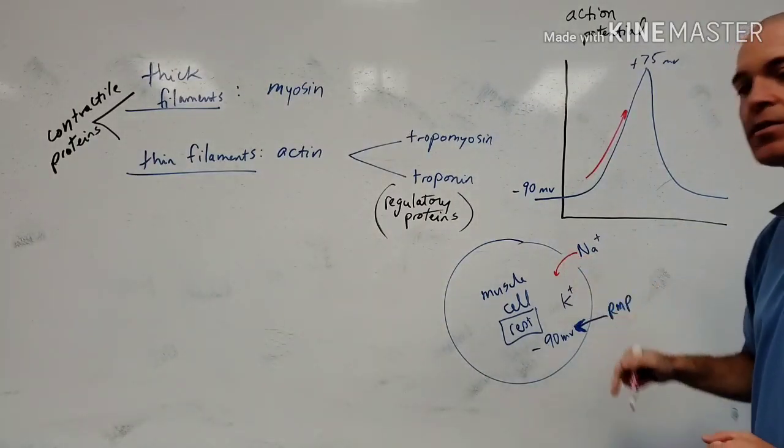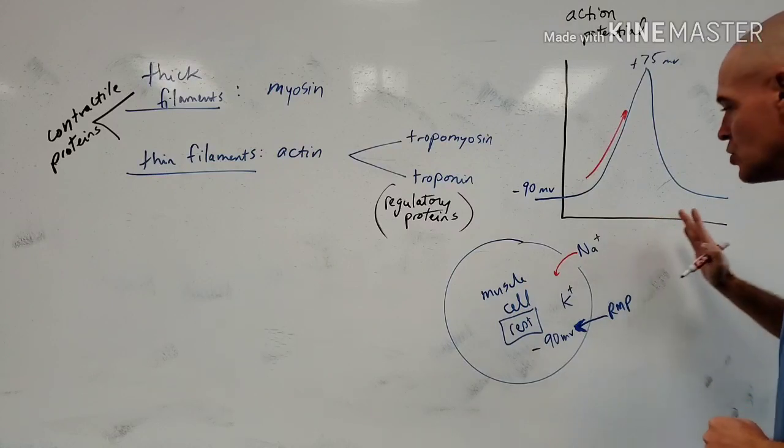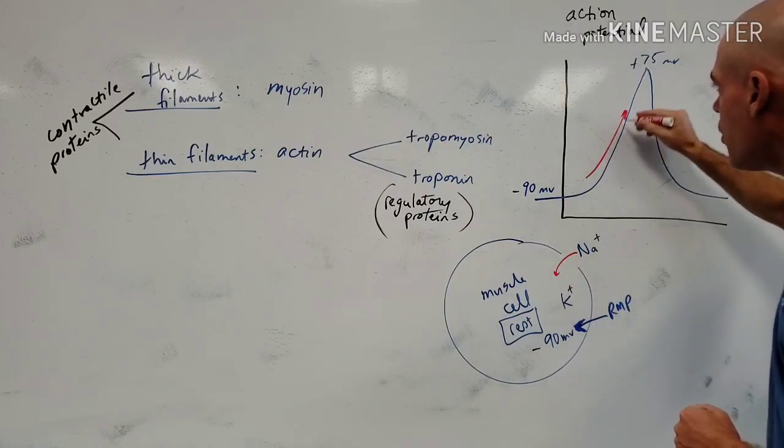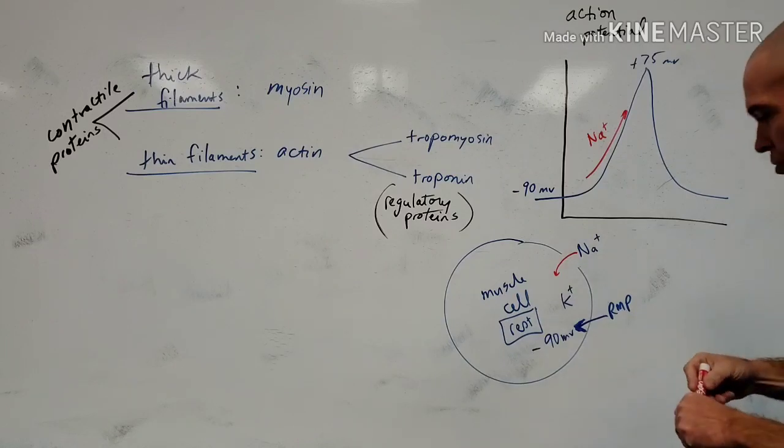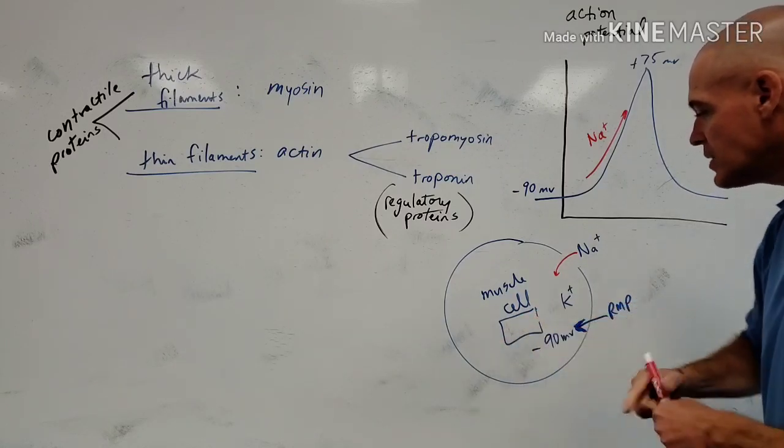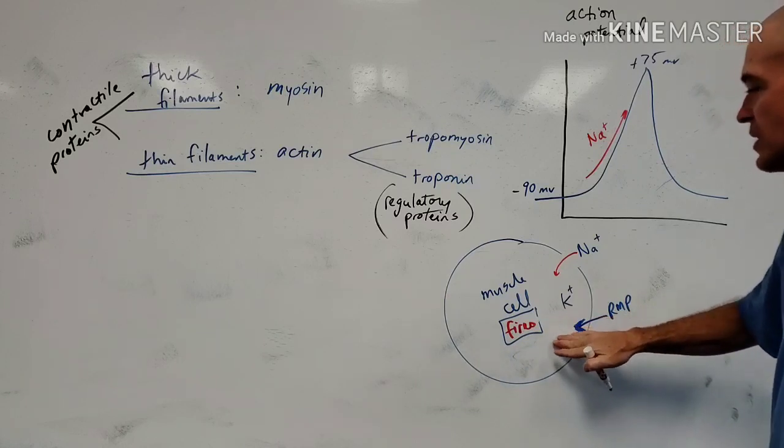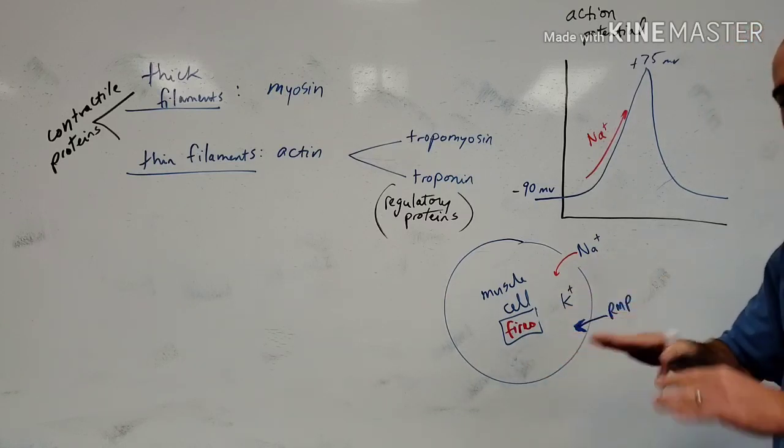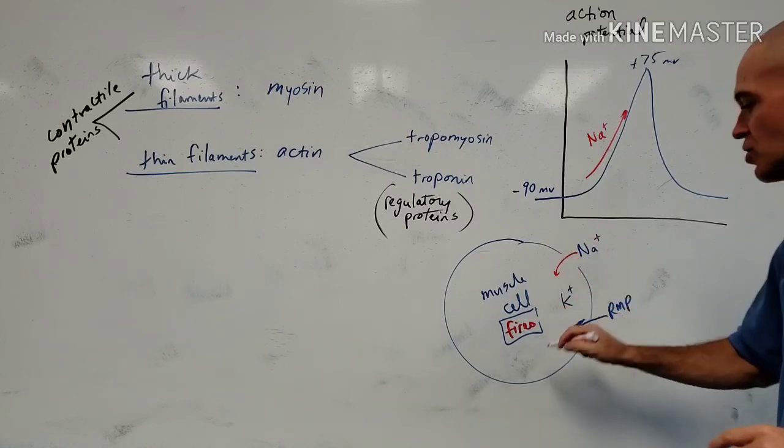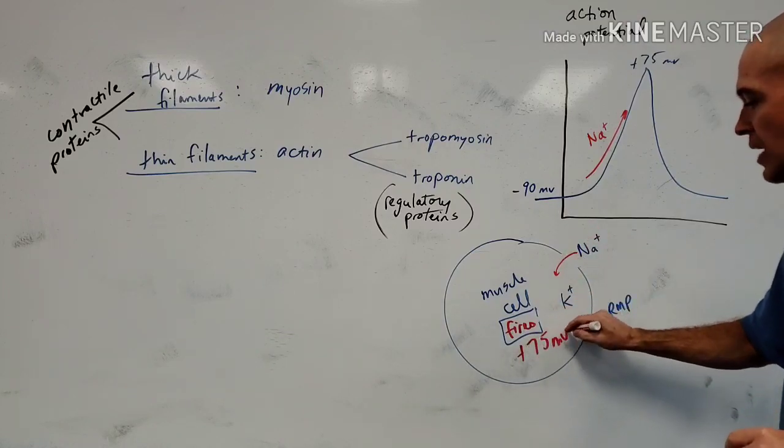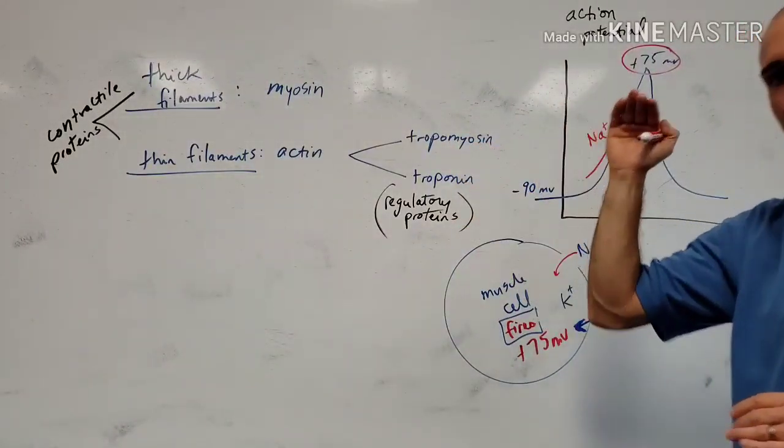Again, when that depolarization occurs, sodium will actually flood in the cell. It floods in because the gates open, the sodium channels open, and sodium naturally wants to be inside. The pump has to force it out. Sodium floods in. So really, this depolarization is triggered by sodium ions. And when it depolarizes, that is going to trigger the firing of the muscle cell, and that's going to change the voltage. Because when sodium's outside and potassium's in, we have a negative 90 millivolt voltage. Well, when sodium changes its position and goes in, our voltage changes. Our voltage spikes up to plus 75 millivolts, and that's what we see right here. That is the peak voltage during firing of skeletal muscle.